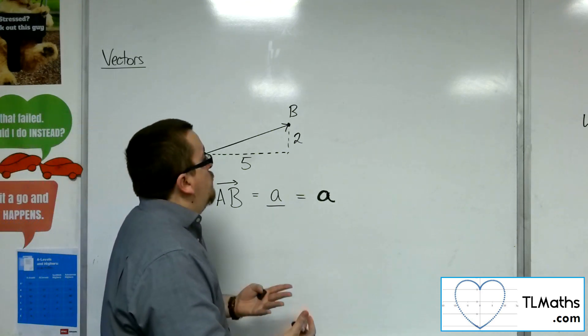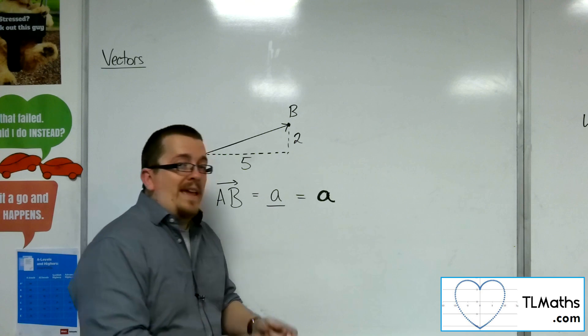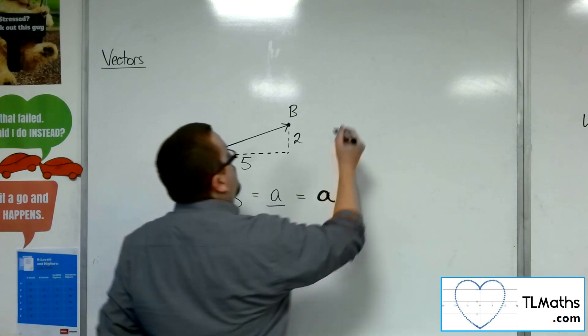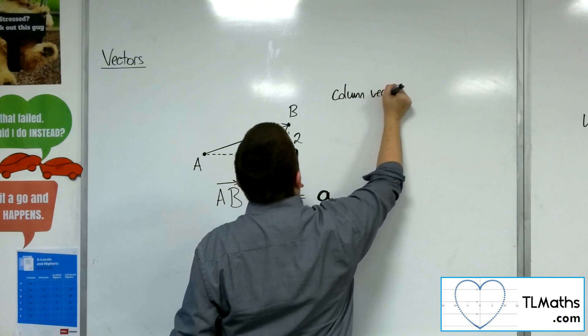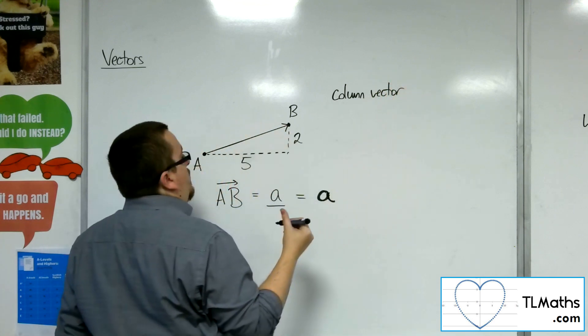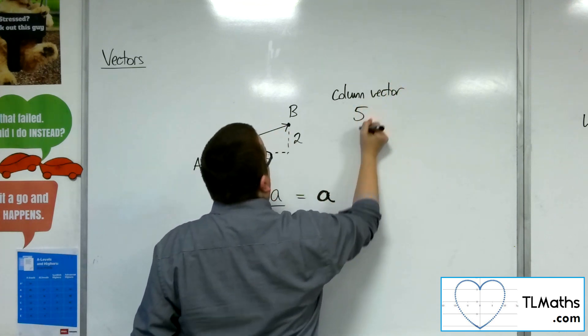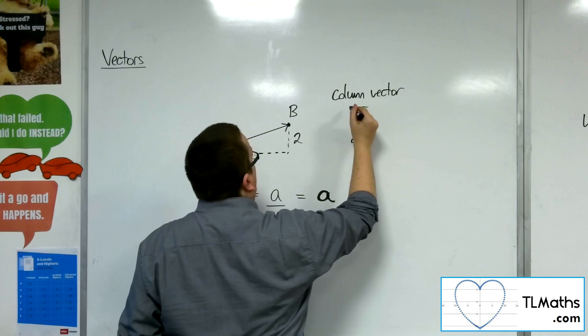Then there are a multitude of different ways that I could represent that vector. One way is to write the vector as a column vector. So a column vector can be written as 5 along and 2 up.